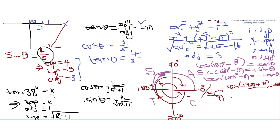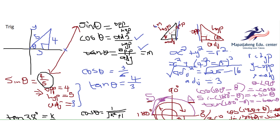Similarly, sin(180° + θ) is in the third quadrant and sine is negative there — only tan is positive — so this becomes negative sine theta. You keep applying the same logic: the bracket tells you which quadrant it is, then you check the trig ratio's sign in that quadrant. Thank you so much — looking forward to seeing you in the next video. Please give us a like, comment, and tell your friends to subscribe so we get educated together.